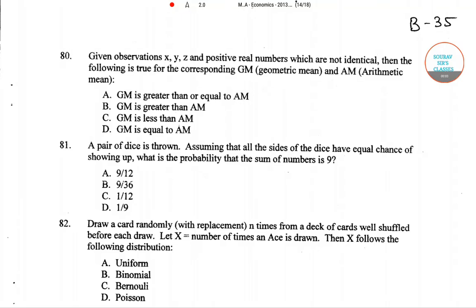Hello students, welcome to Short Observed Classes. In today's video we'll solve question number 80. In this question it is given: for observations x, y, z and positive real numbers which are not identical, the following is true for corresponding geometric mean (GM) and arithmetic mean (AM). We have three options. We know that geometric mean is always less than arithmetic mean.